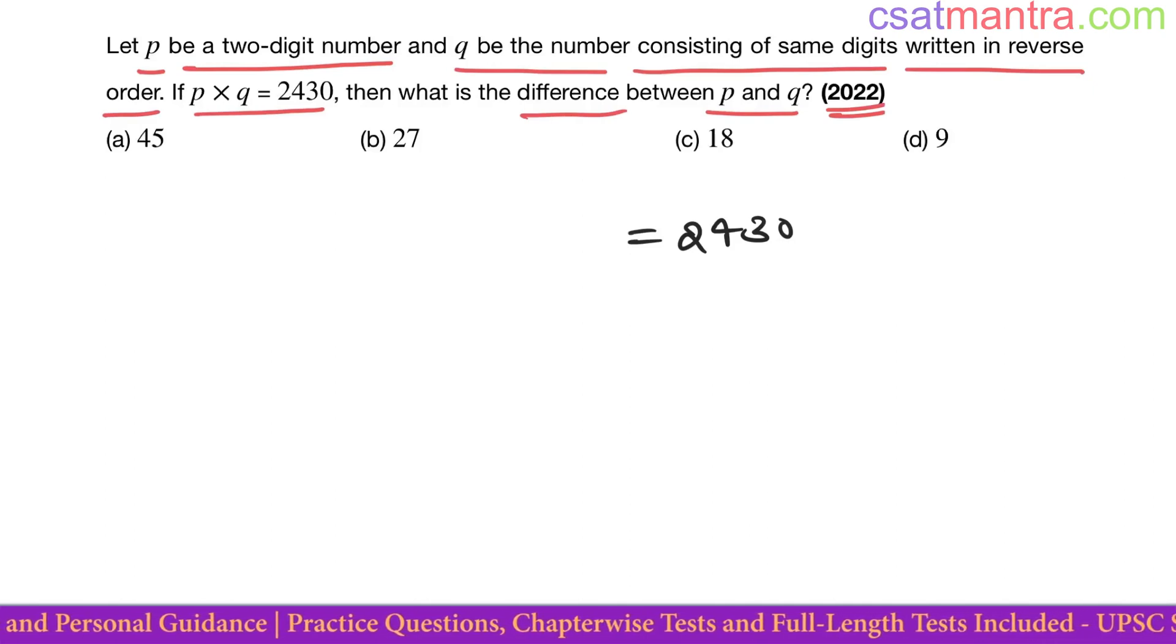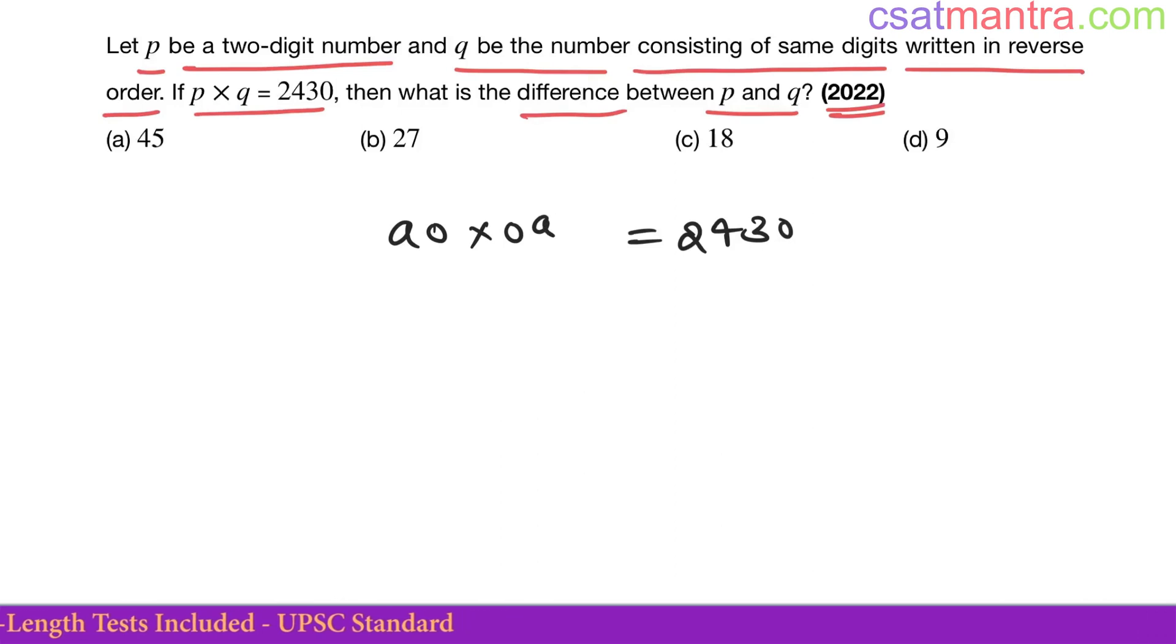You have to apply the logic here to arrive at the answer in short time. Now see, 2430 means one of our numbers has zero. If that's the case, zero into a, this is a two-digit number, this is a single-digit number, but there is no restriction given on q. Q can be two-digit or single-digit.